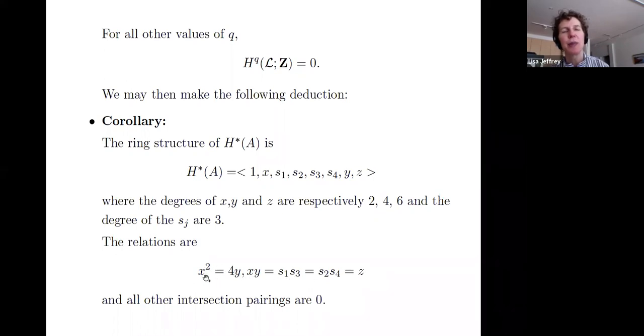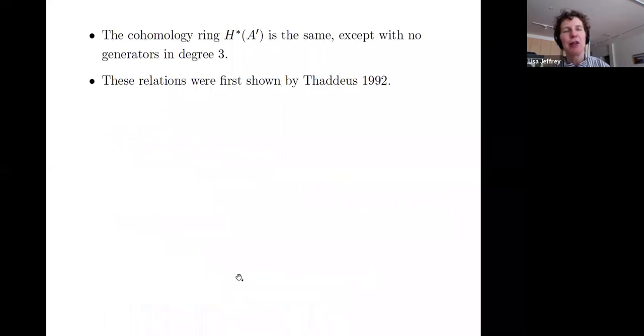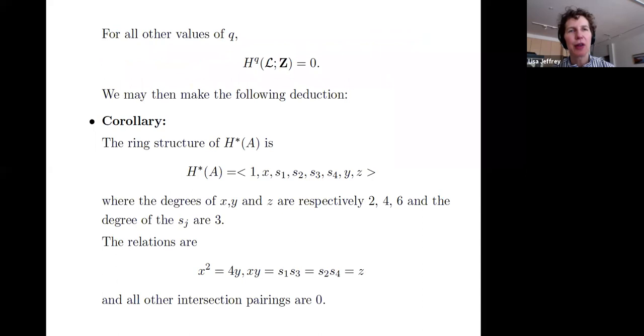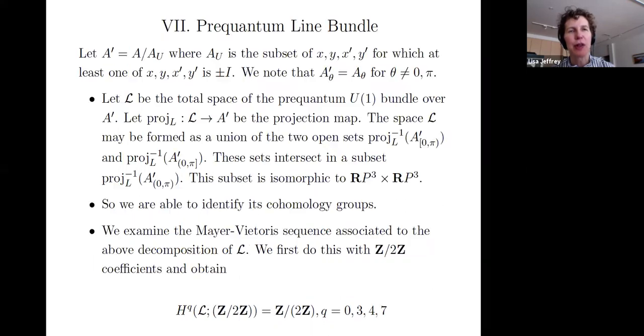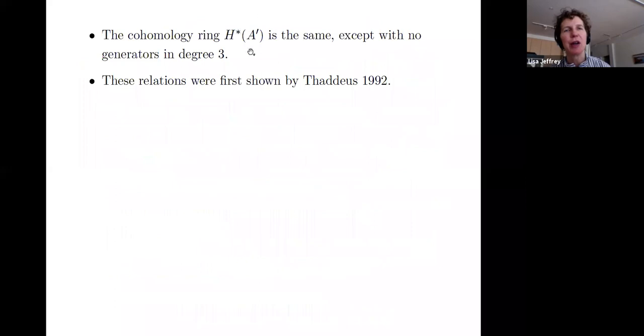Thaddeus, to get this result about X squared equals four Y, Z and Y, used the Verlinde formula. I should also identify there is a space A prime, which is defined as the space where you quotient out the copies of S^3. You quotient out the degree three elements. A prime is given here. You're just quotienting out those generators. The cohomology ring of A prime is the same as the cohomology ring of A, provided that you get rid of all the things in degree three. You just eliminated the S's.